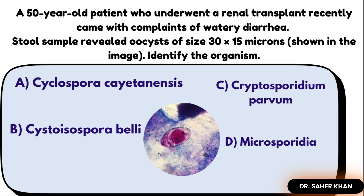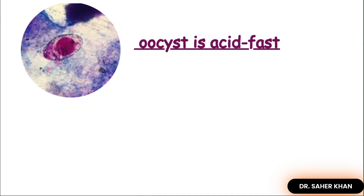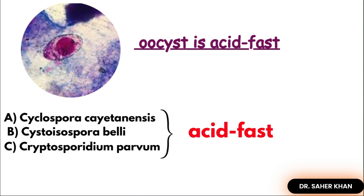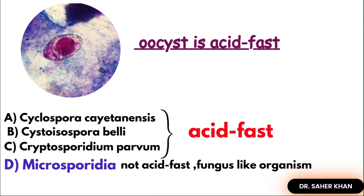If you notice the image, a blue background with red-colored oocysts is shown, which means the organism is acid-fast. Among the four options, three are acid-fast: cyclospora, cystoisospora, and cryptosporidium. Microsporidia is not acid-fast and has been reclassified as a fungus — it is no longer a parasite, so we can rule it out immediately.